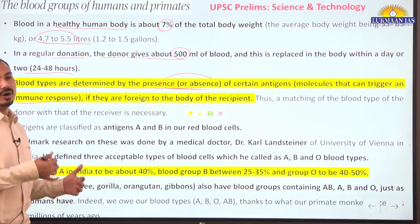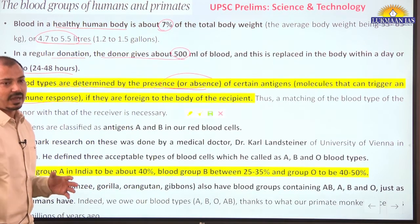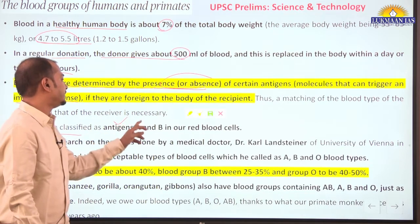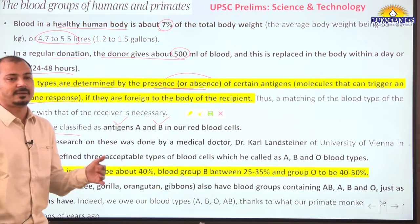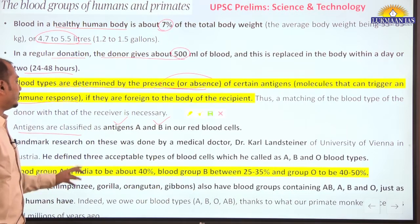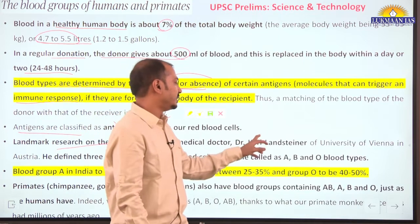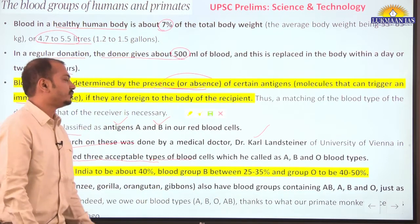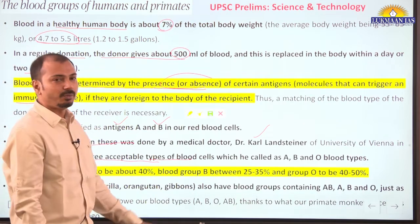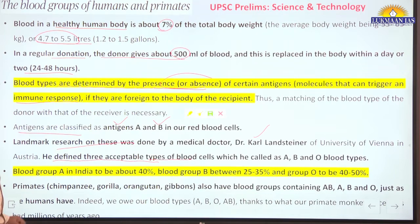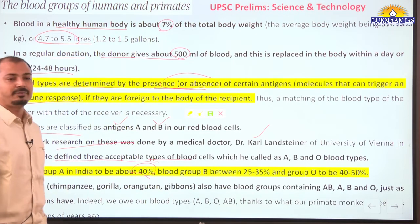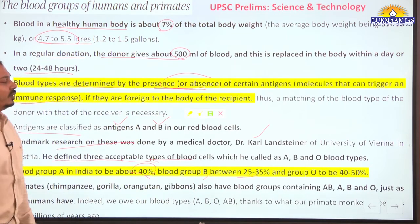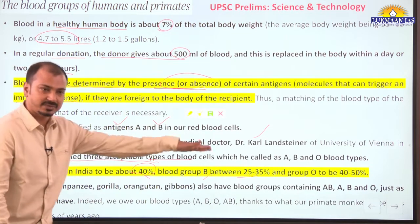Antigens are classified as Antigen A and Antigen B; their presence or absence in red blood cells decides the blood group. Pioneer medical research by Karl Landsteiner of the University of Vienna, Austria defined three basic types: A, B, and O — and he received the Nobel Prize for Medicine for this research. In India, blood group A is around 40 percent of people, blood group B is 25 to 35 percent, and O is 40 to 50 percent.